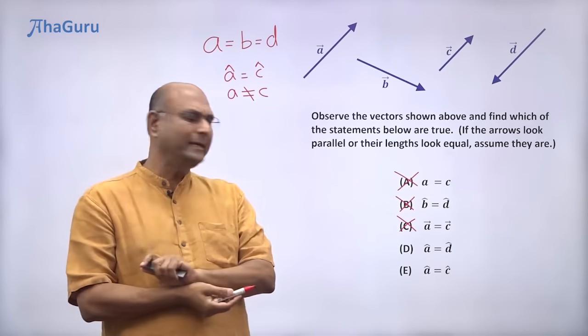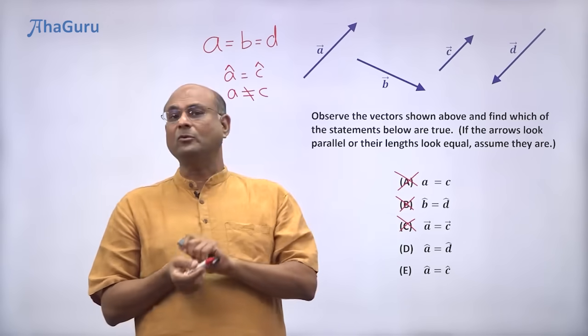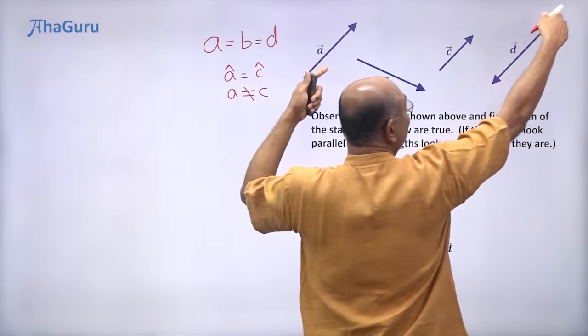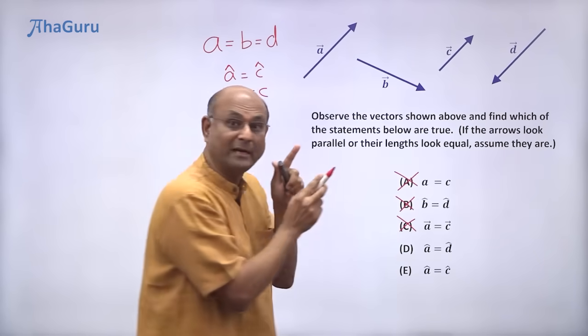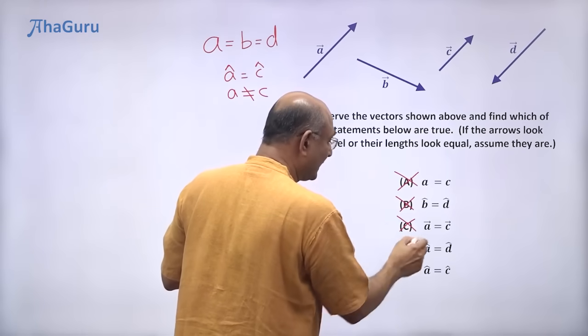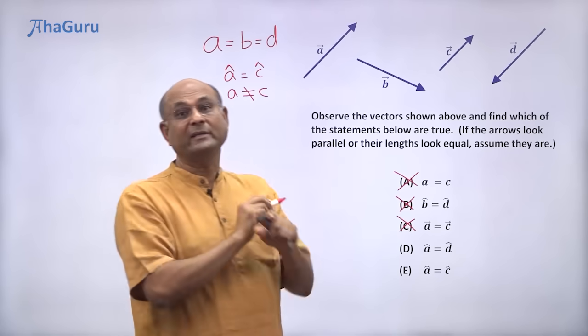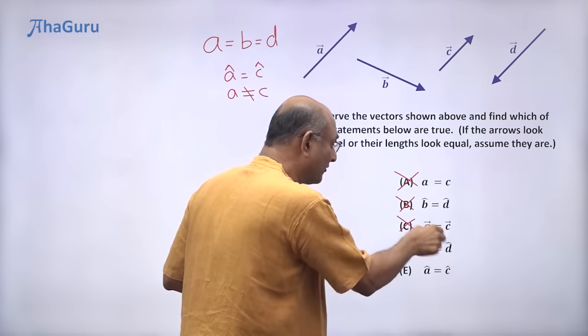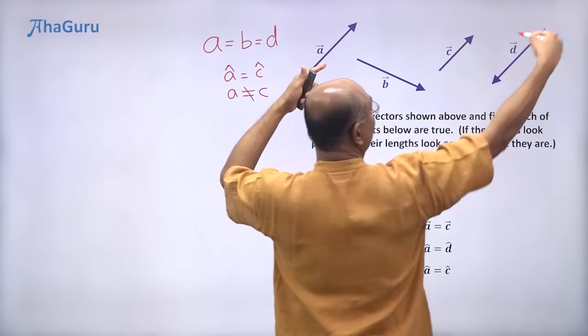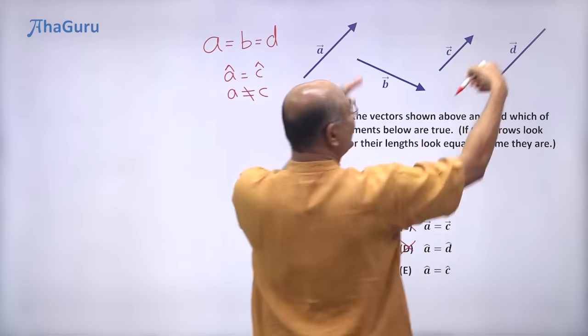What about option D? A cap is equal to D cap. A cap means direction of A, direction of D. Well, they are parallel, but they are not pointing in the same direction. They are pointing in opposite direction. So clearly direction of A is not equal to direction of D. So this is also wrong. They are in opposite direction. This is pointing this way, that is pointing that way.